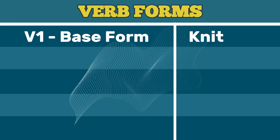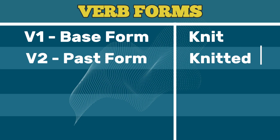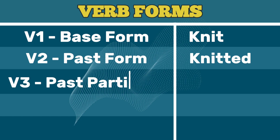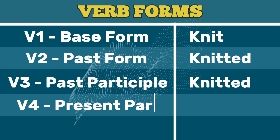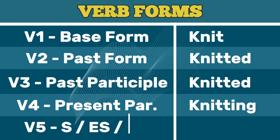V1 Base Form: Knit. V2 Past Form: Knitted. V3 Past Participle: Knitted. V4 Present Participle: Knitting. V5 Third Person Singular: Knits.